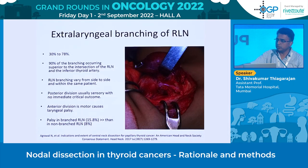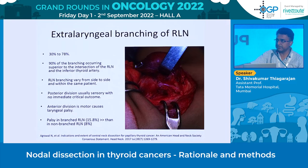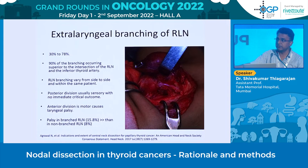We also need to be aware of the extralaryngeal branching of the recurrent laryngeal nerve. In 30 to 78 percent of cases, the RLN can branch into two or more branches before entering the larynx — up to five branches have been reported. The anterior branch has motor function, and damage leads to vocal cord palsy; the posterior branch has sensory function and damage may cause dysphagia. When branching is present, the incidence of vocal cord palsy is almost double compared to when there is no branching.